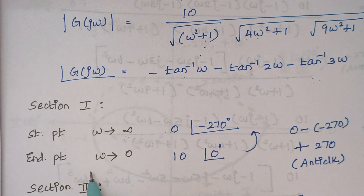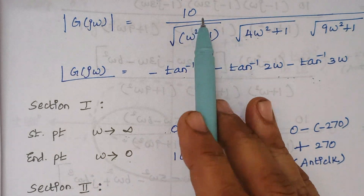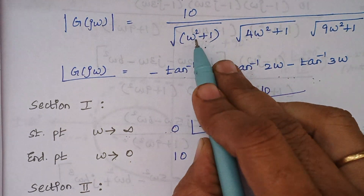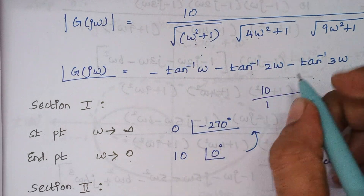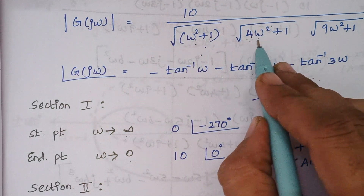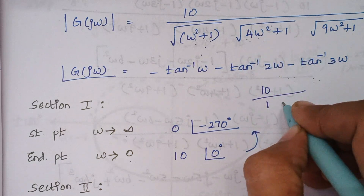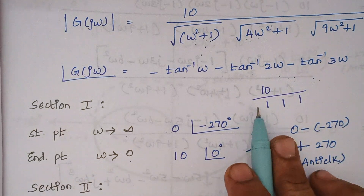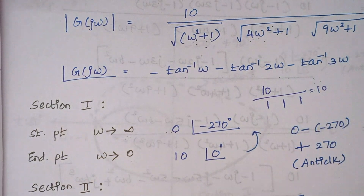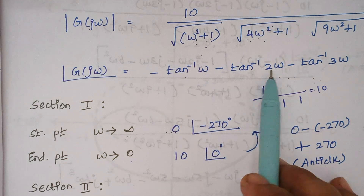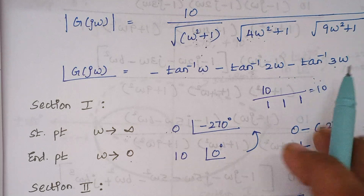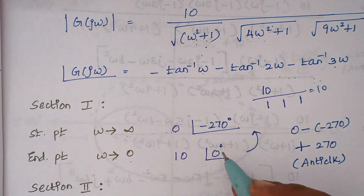When we substitute ω = 0 in the magnitude: each ω term becomes 0, so we get 10 divided by 1×1×1 = 10. When we substitute ω = 0 in the phase expression, tan⁻¹(0) = 0 for all three terms, so the phase angle is 0 degrees.